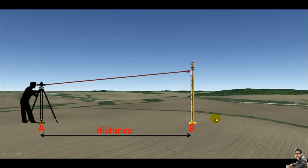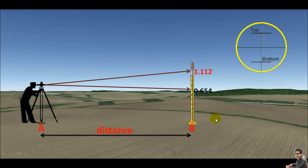Also, we need the upper hair and lower hair readings. Let's say the upper hair reading is 1.112 and the lower hair reading is 0.654 meters.